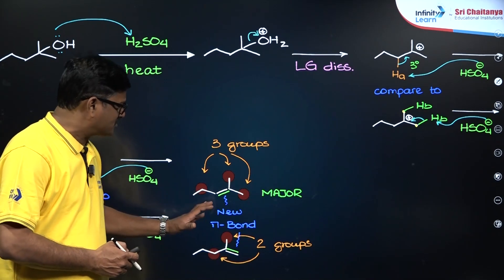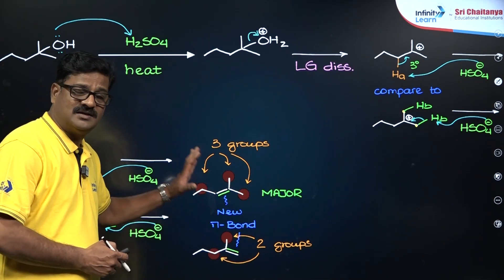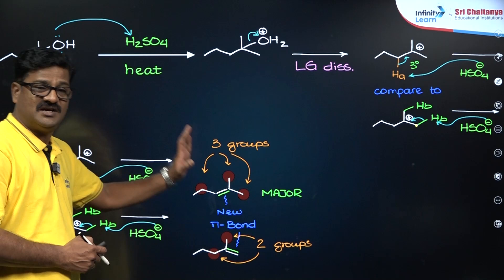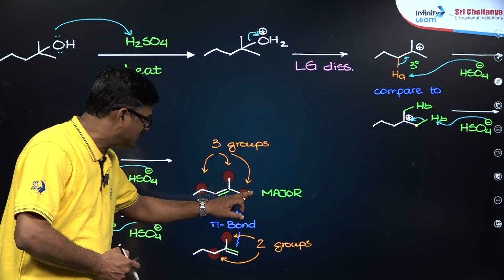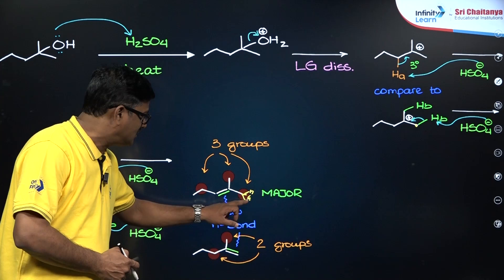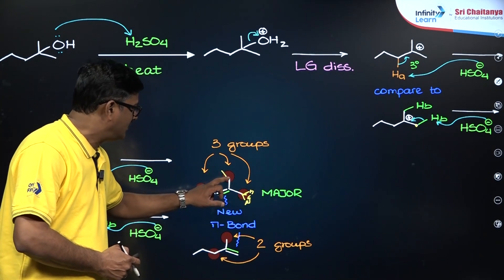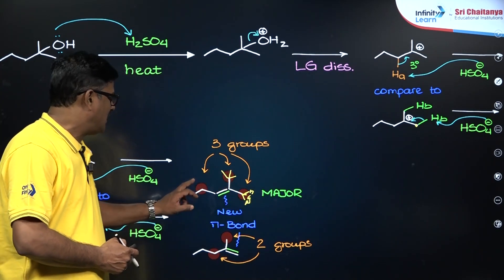For this structure, the alkene formed by removing hydrogen atom A shown here, has alpha hydrogens.